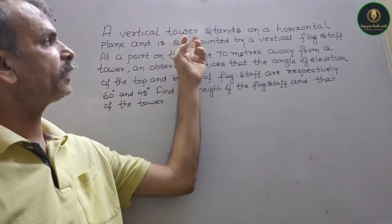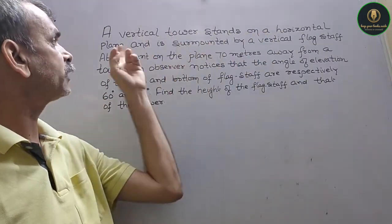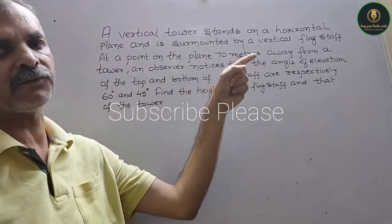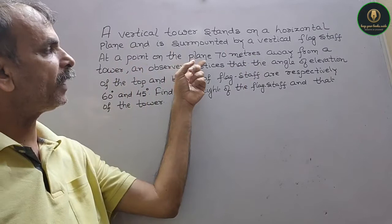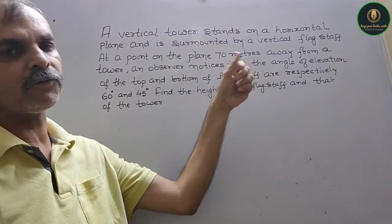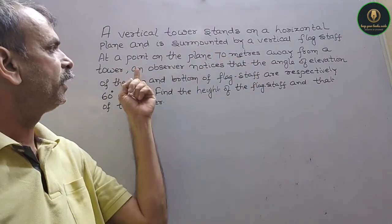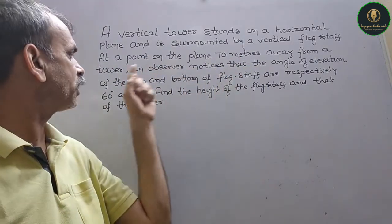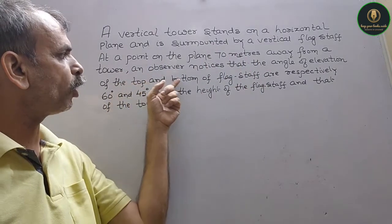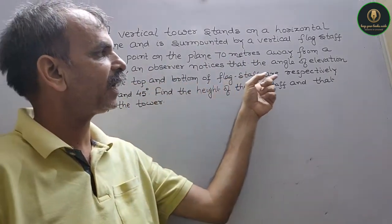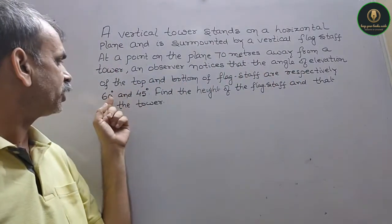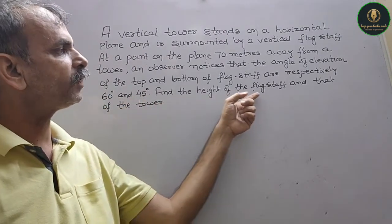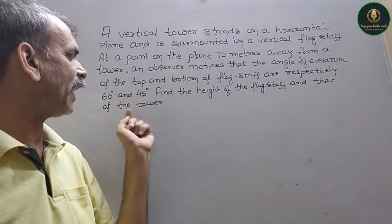A vertical tower stands on a horizontal plane and is surmounted by a vertical flagstaff. At a point on the plane 70 meters away from the tower, an observer notices that the angle of elevation of the top and bottom of the flagstaff are respectively 60 degrees and 45 degrees. Find the height of the flagstaff and that of the tower.